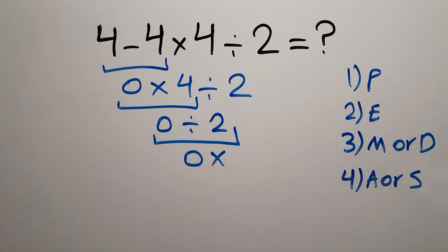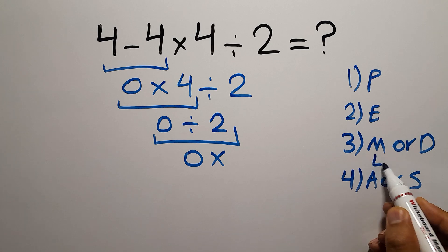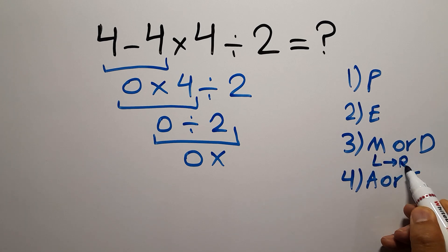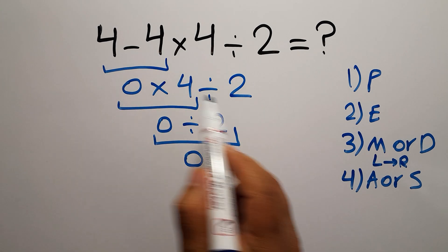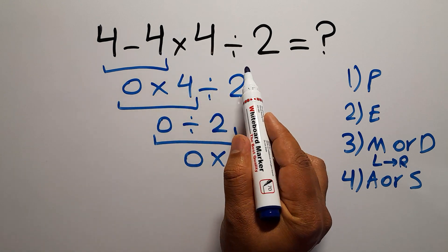Remember that multiplication and division have equal priority and we have to work from left to right. The same applies to addition and subtraction. In this expression we have one subtraction, one multiplication, and one division.